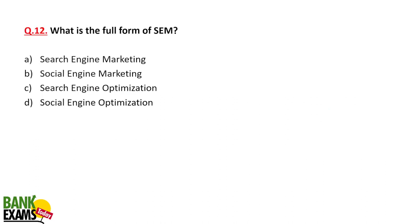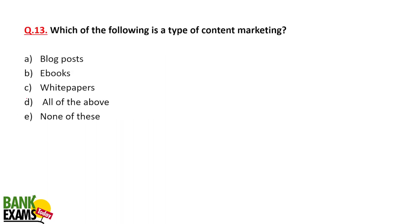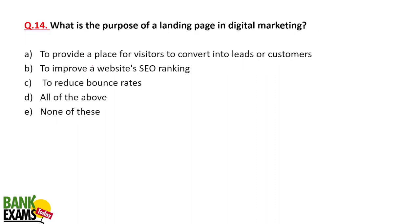What is the full form of SEM? That is search engine marketing. Search engine optimization is SEO — social engine marketing is not a term. Which of the following is a type of content marketing? Content marketing can be done via blog posts, e-books, or white papers.